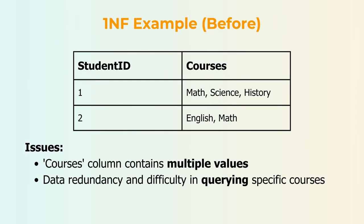Here's an example of a table before applying 1NF. The courses column has multiple values for each student. For example, student 1 has math, science, and history, all listed in one cell. This makes it difficult to search or update a specific course. Imagine if you wanted to find all students taking science — it would be hard to filter out because the courses are grouped together. This setup can also lead to mistakes or missing information.